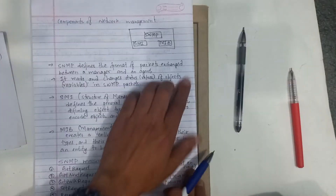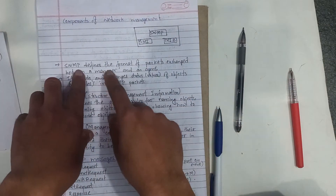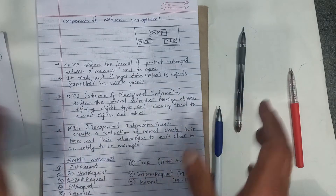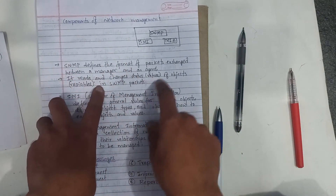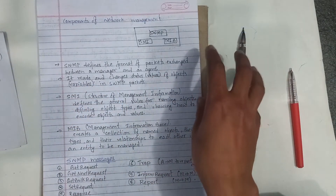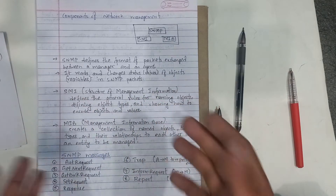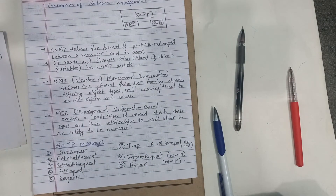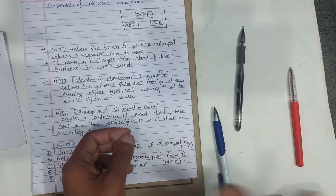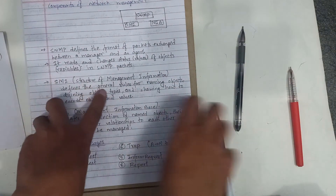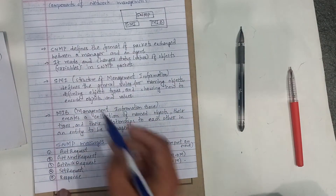Let's see the components of network management. There are two different protocols: SMI and MIB. SNMP defines the format of packets exchanged between manager and agent. The protocol reads and changes status values of objects and variables in SNMP packets. SMI — Structure of Management Information — defines the programming syntax rules for variable naming and types.